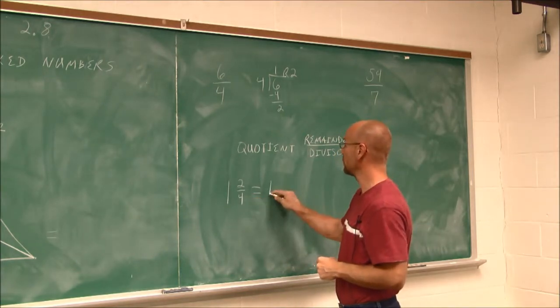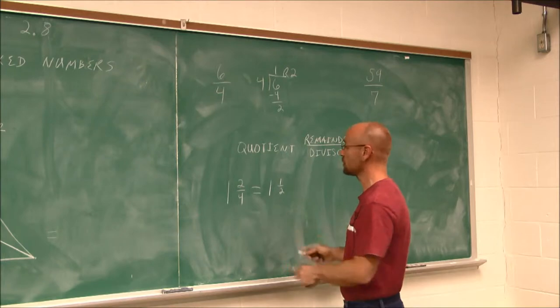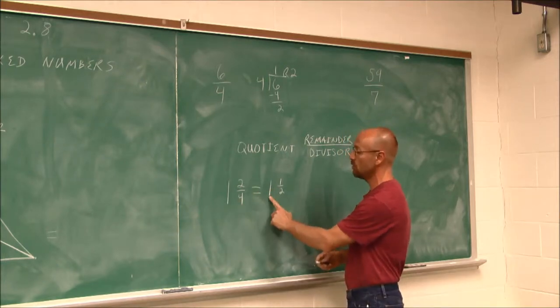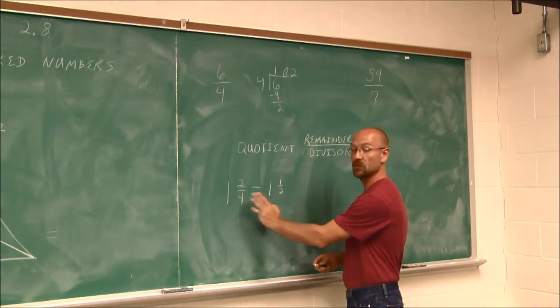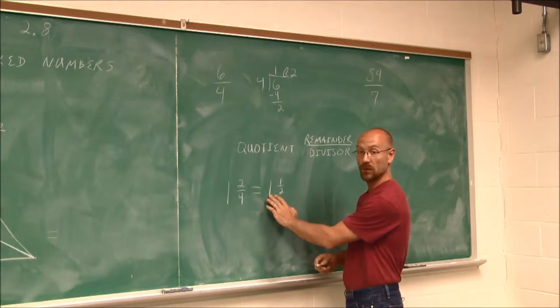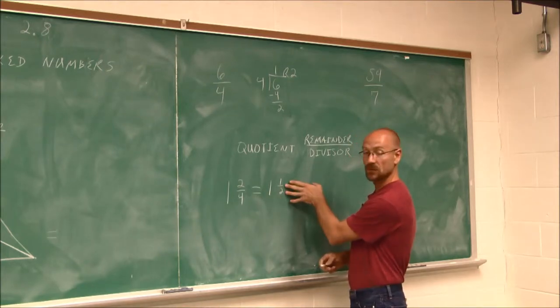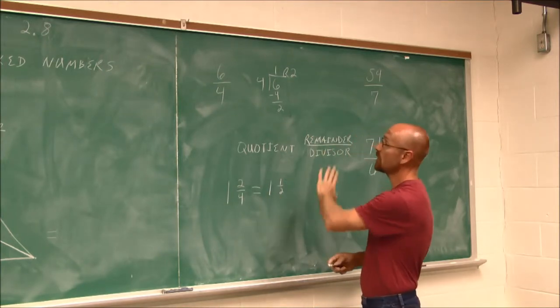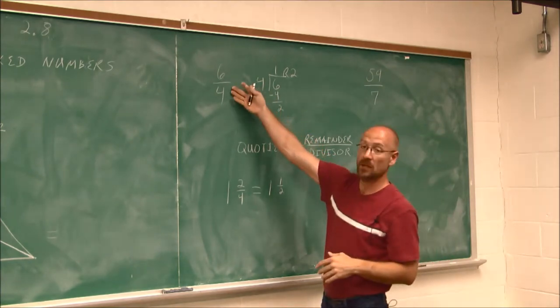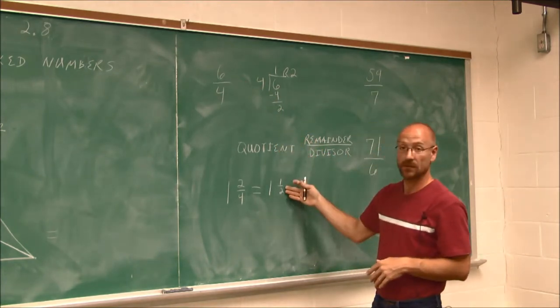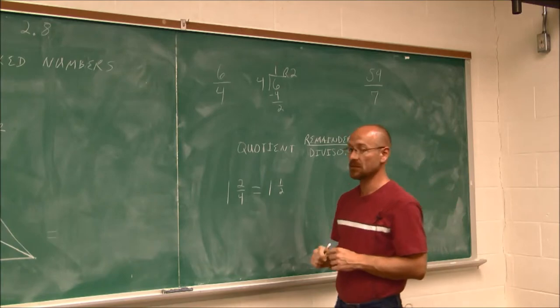So if we look at this, we can say, hey, we can reduce this piece of the fraction. 2 over 4 reduces to 1 half, 1 over 2. So I have 1 and 2 fourths, which is 1 and 1 half. Notice I didn't do anything to that whole number, the quotient part. Just reduce the fraction. So that's how we work with numbers to go from an improper fraction to a mixed number.